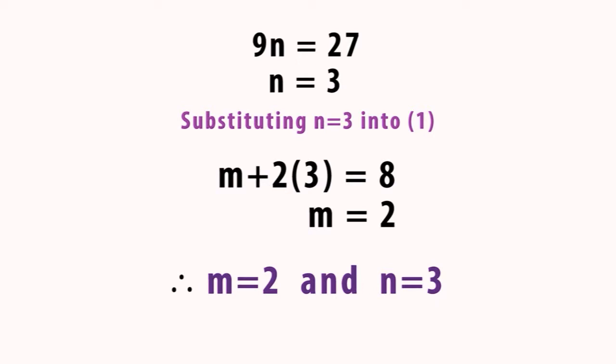Then you substitute N = 3 into equation 1. Alright. So, M + 2(3) = 8, giving you M = 2. Since 2 times 3 is 6, 8 minus 6 is 2. So, your M would be 2. Therefore, M = 2 and N = 3. Okay.